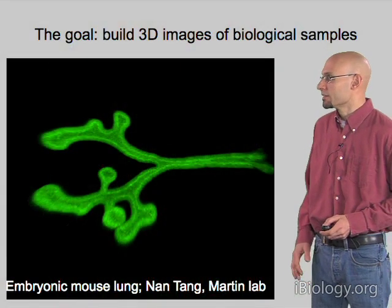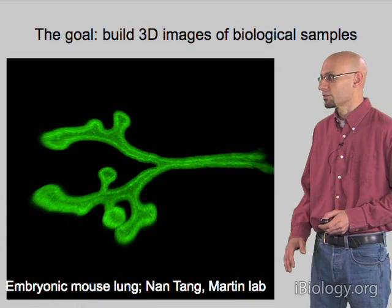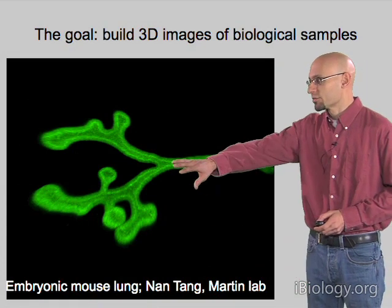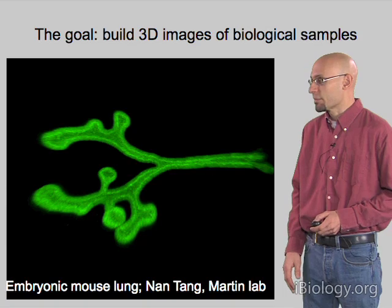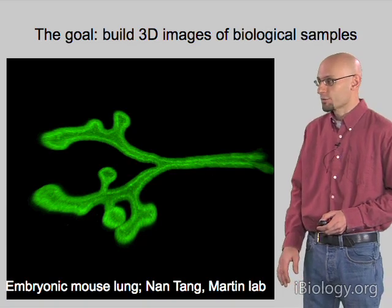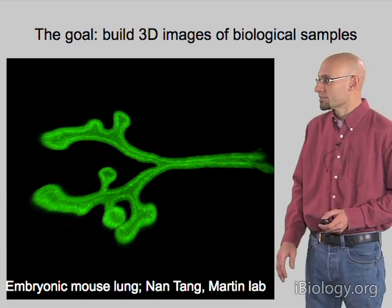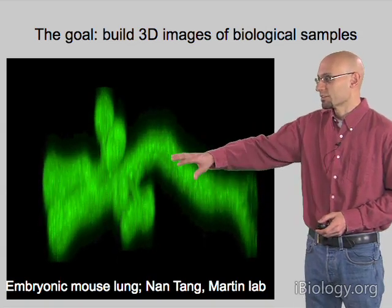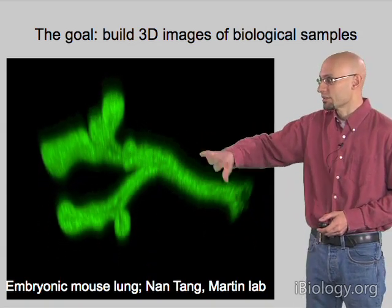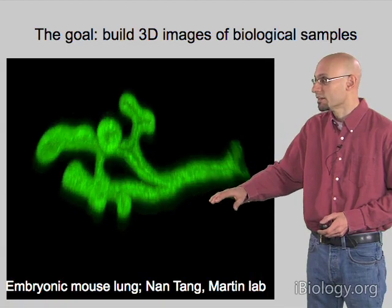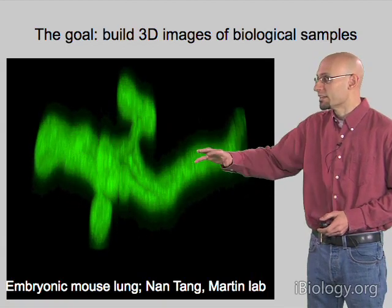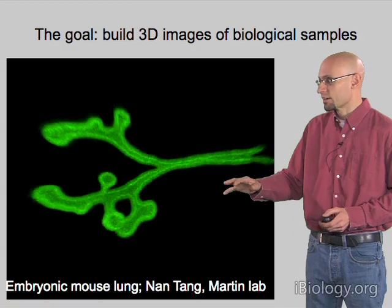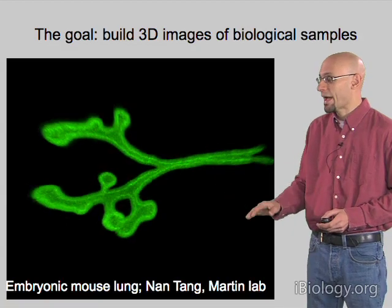Our goal is to build three-dimensional images of biological samples using a microscope. The example I'm showing here is an embryonic mouse lung — it's about 200 microns thick. As you can see in this animation, we've captured a three-dimensional image where we can see the complete structure of this mouse lung in 3D, rotate it around, and look inside it.